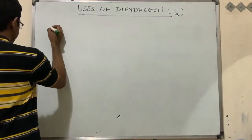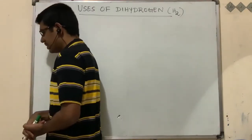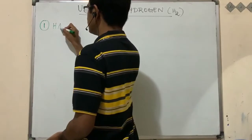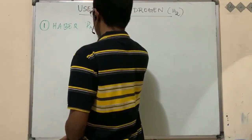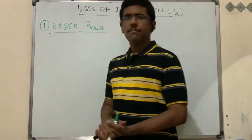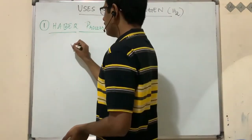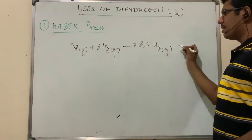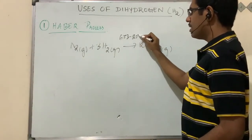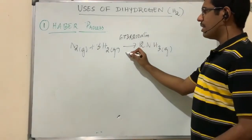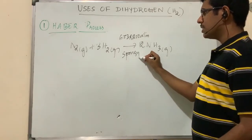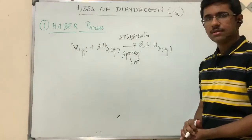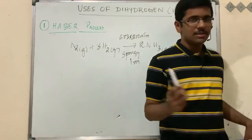The first use of dihydrogen is the synthesis of ammonia using the Haber process. The reaction is: N₂ + 3H₂ → 2NH₃, carried out under 673 Kelvin, 200 atmospheres pressure, with spongy iron used as a catalyst. This is the Haber process to prepare ammonia. Without hydrogen gas this reaction is not possible, so hydrogen gas is essential here.